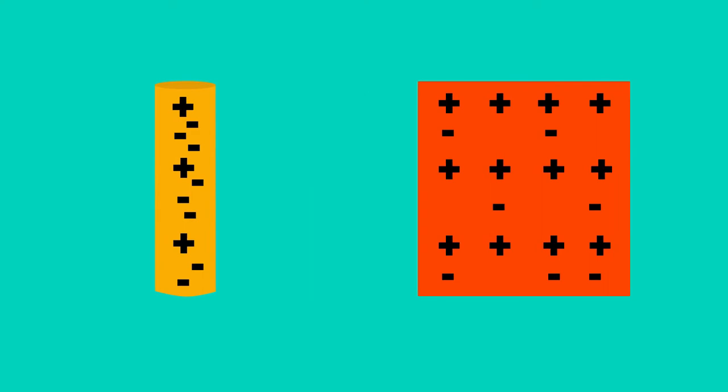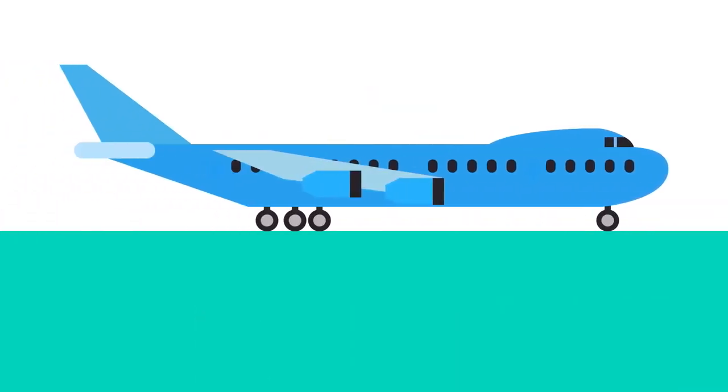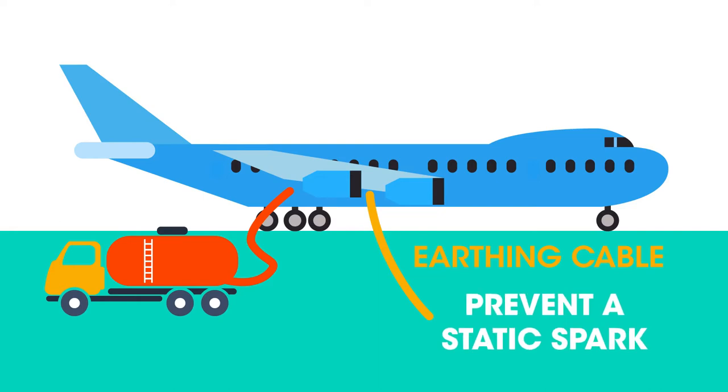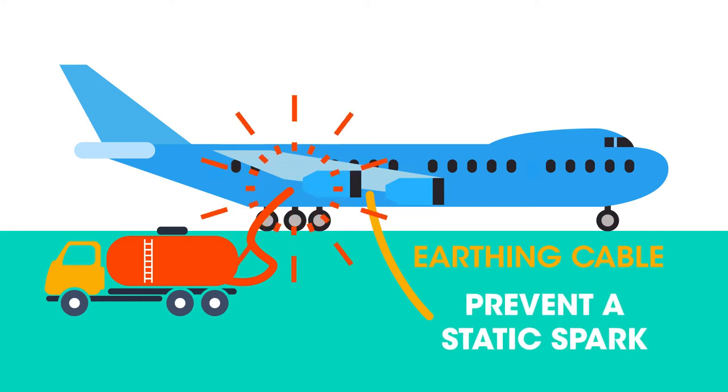The slight spark caused by the electrons jumping from one material to another can be dangerous. Petrol and other liquid fuels build up a static charge as they flow through a plastic pipeline. There is an earthing cable connected to the fuel nozzle at a garage, and aeroplanes are linked via a similar cable during fueling to prevent a static spark igniting the fuel and causing an explosion.